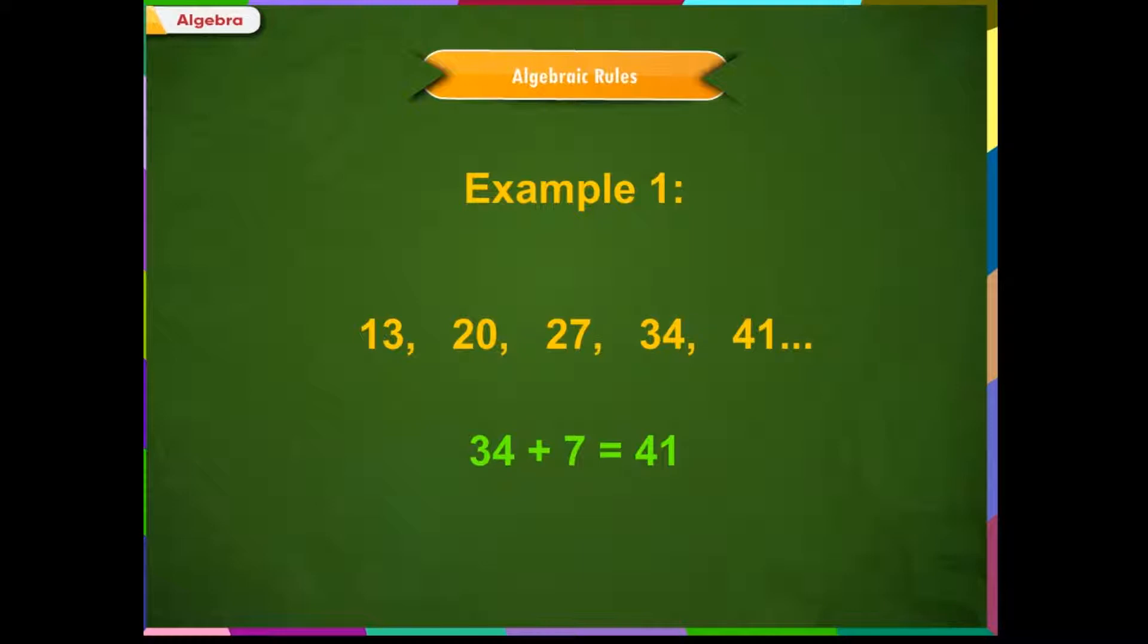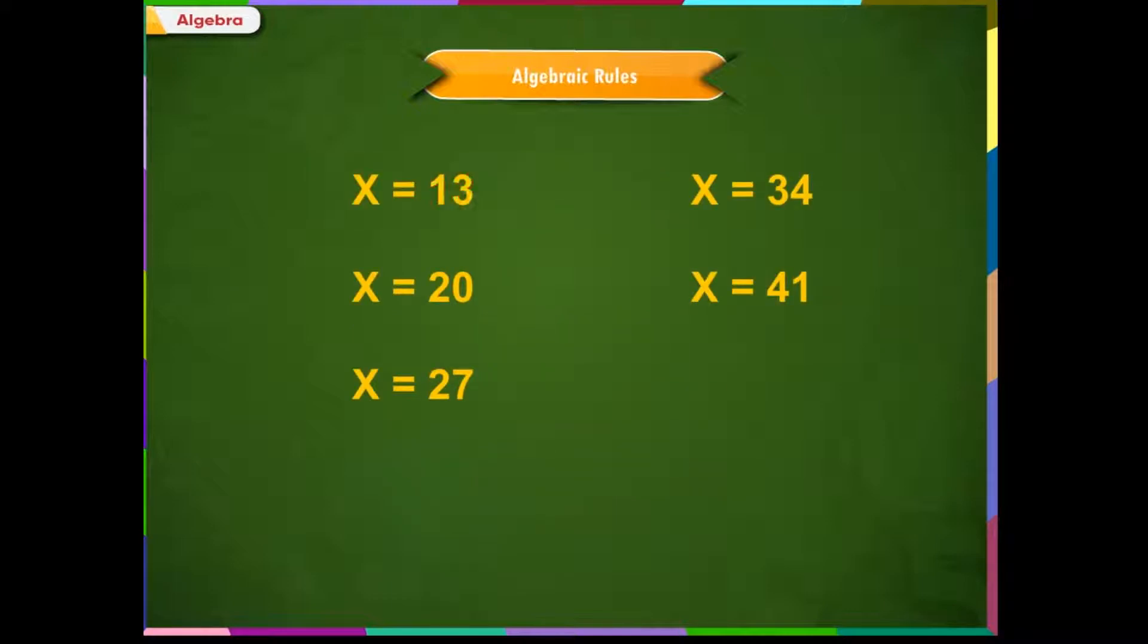So, the algebraic rule is X plus 7. X is variable here and 7 is constant. We put the first number 13 in X. We get 13 plus 7, 20. We put the second number 20 in place of X. We get 20 plus 7, 27. And so on. Now, when we put the last number 41 in the rule, we get 41 plus 7 equals 47.